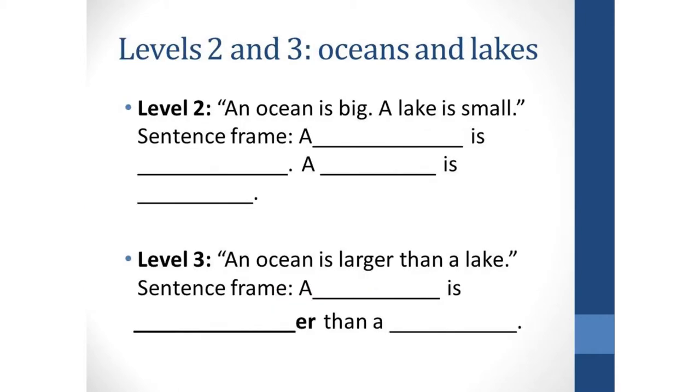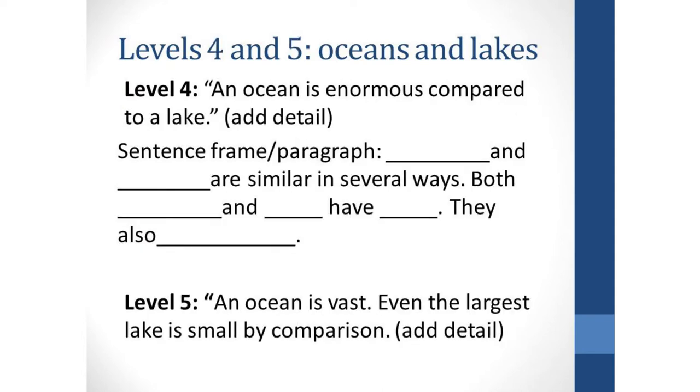A level two student is going to be able to create simple sentences based on this task. So a simple sentence frame could be an ocean is big, a lake is small. A level three student should be able to compare and contrast. So we might want to teach the E-R-E-S-T comparative form of words so that they're able to say an ocean is larger than a lake. And again, as I showed you in the last clip, levels four and five are going to be better able to use language, but we could still provide a compare contrast template for them to be able to do this task using complex language structures.